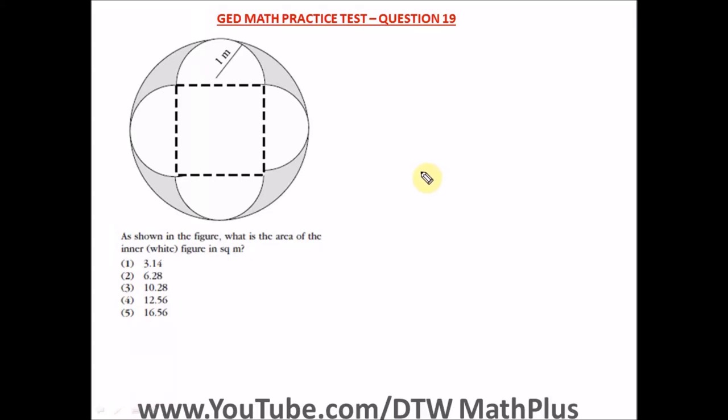Question 19 of the GED Math practice test, part one — that's the part with a calculator. We have a figure shown, and the question asks: what is the area of the inner white figure in square meters? So we need to find the area of the inner white figure, which includes semicircles and a square, neglecting all the shaded parts.